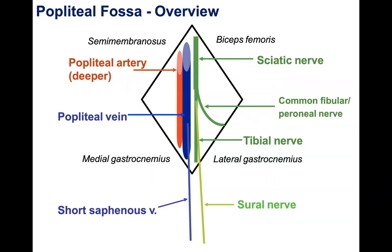We have the large sciatic nerve originating from the lumbosacral plexus, and its two branches emerging from its epineurium: the common fibular — also called peroneal — nerve, and the tibial nerve. The peroneal nerve exits the sciatic nerve laterally and innervates more lateral leg structures. The tibial nerve comes off posteriorly and innervates more posterior calf structures. The sural nerve is very superficial and is only a sensory nerve, getting sensation from the skin of the calf.